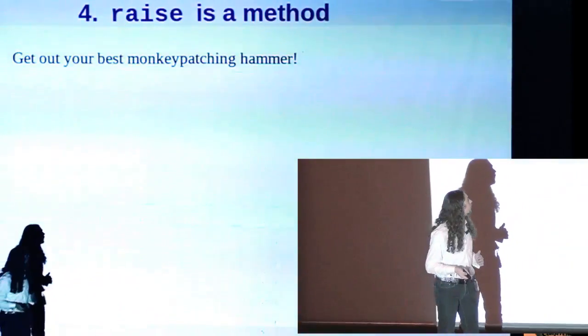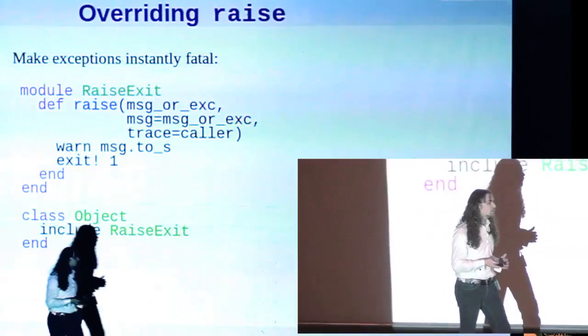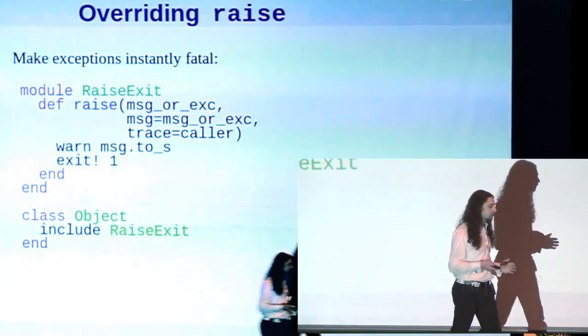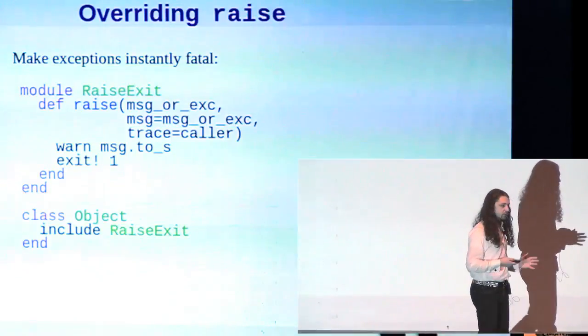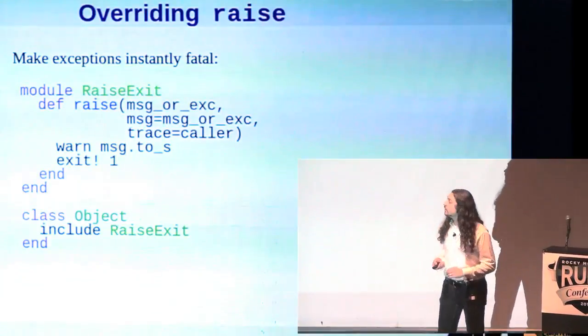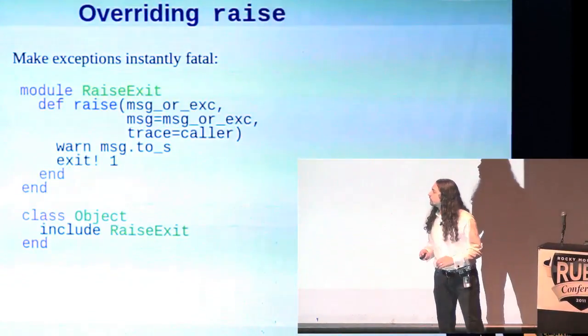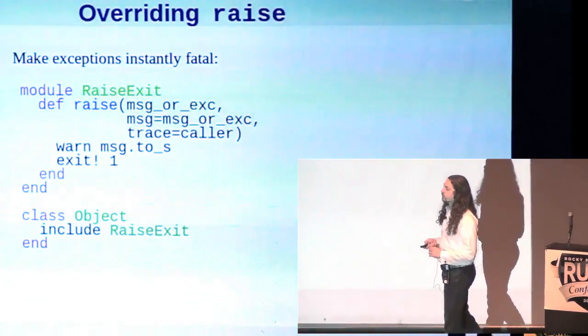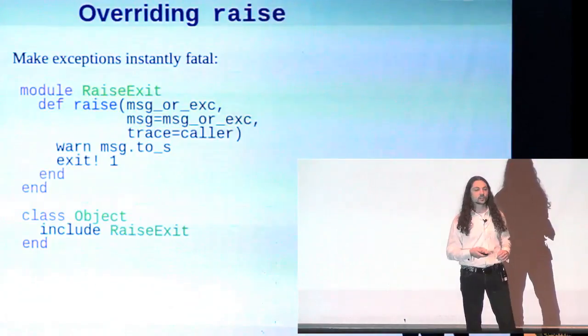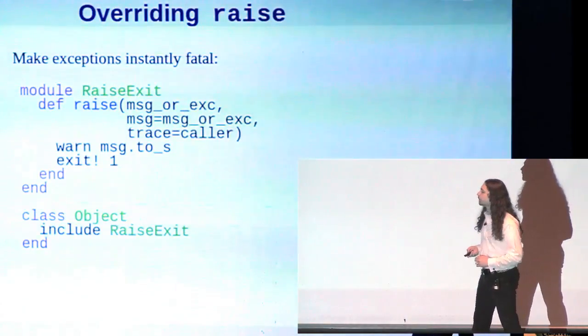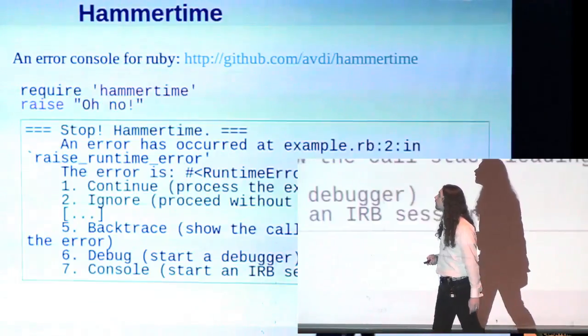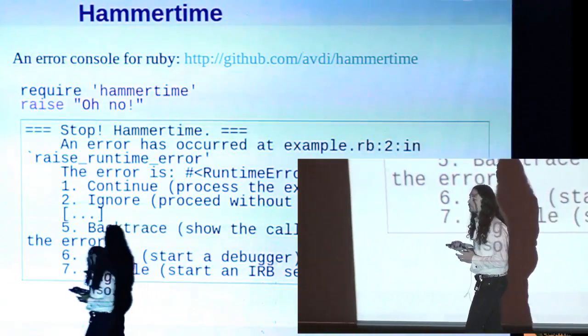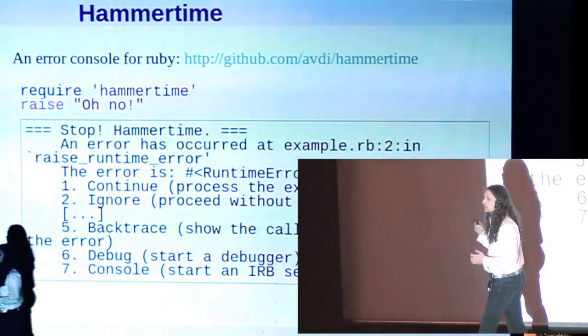And what this means is we can overwrite it. We can write our own raise. Here's one example. Kind of a silly example. Let's say we're tired of all this exception business and we just want errors to be instantly fatal. Well, here's a way to make it so. This version of raise just prints out the exception message and then terminates the program. Not saying you should do this, but you could.